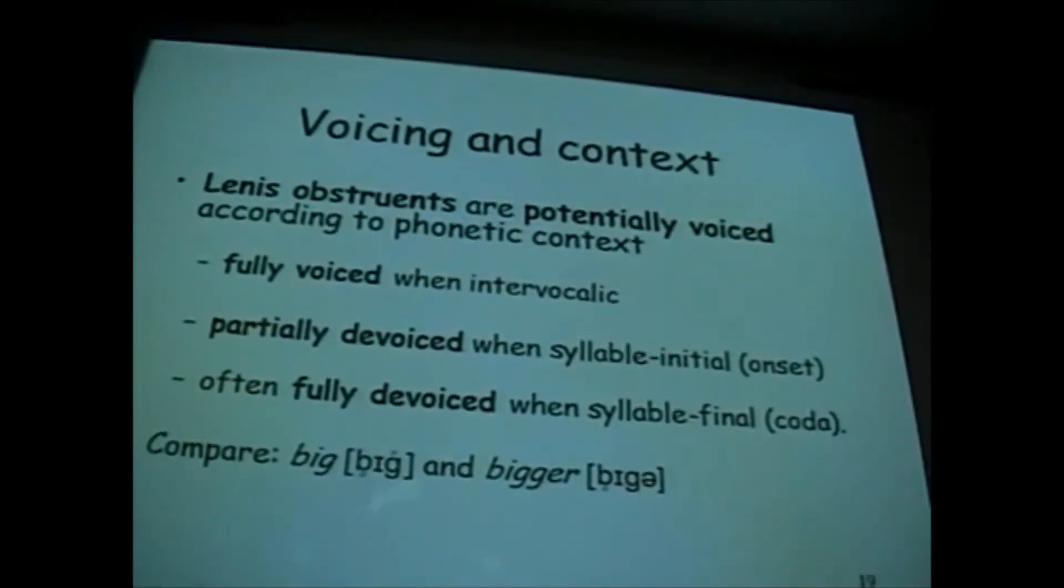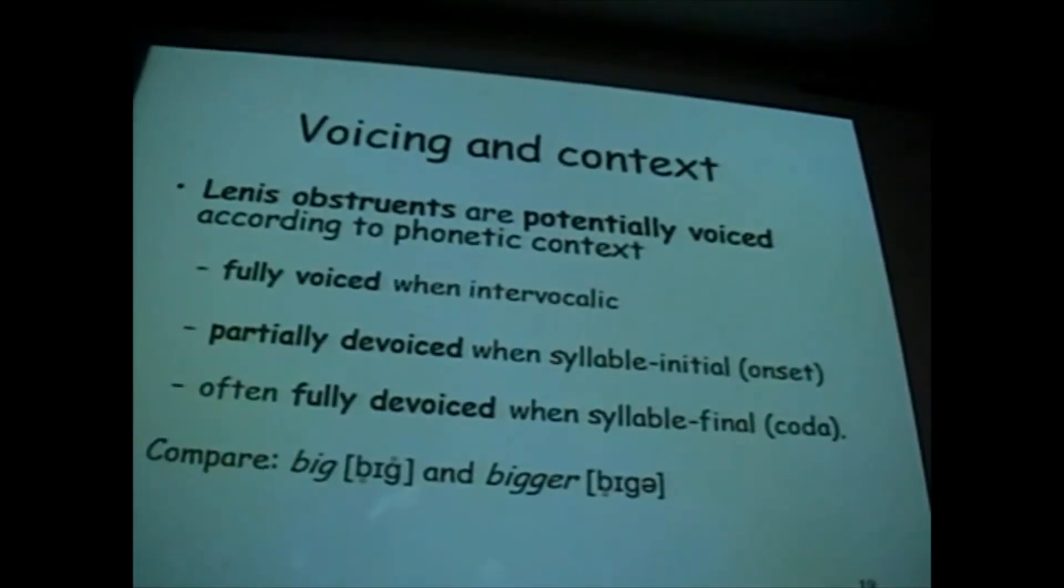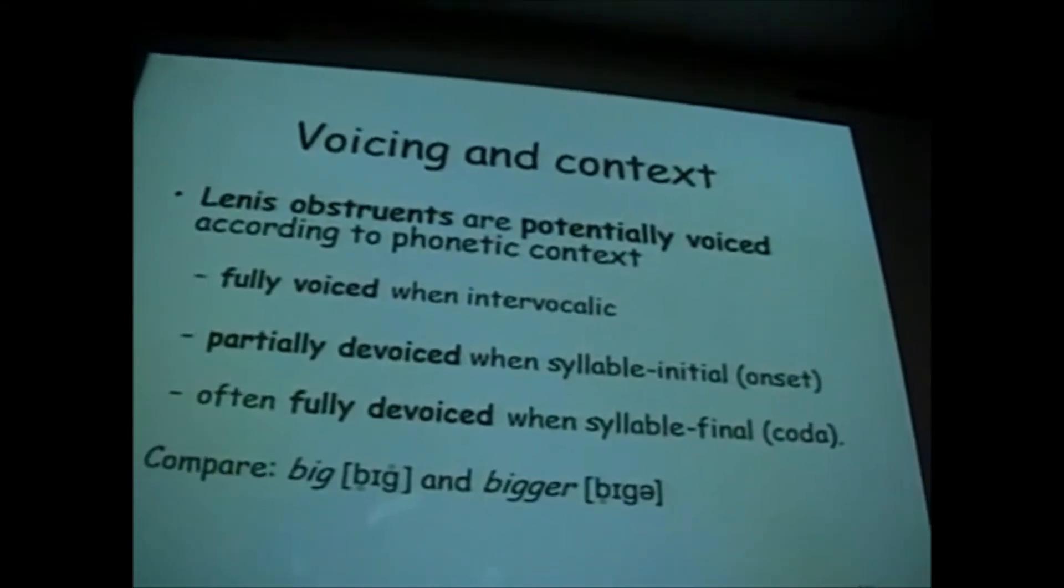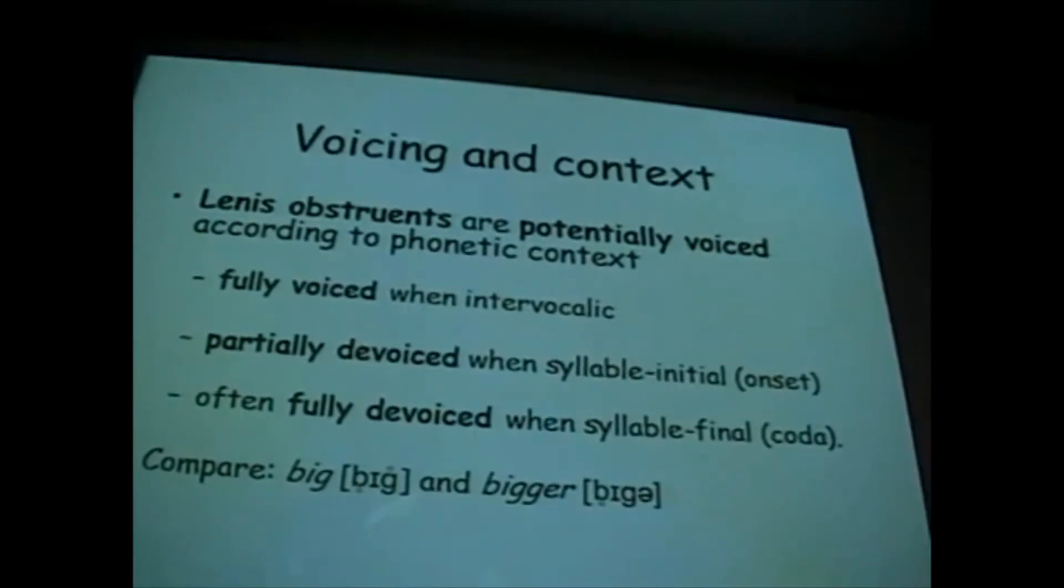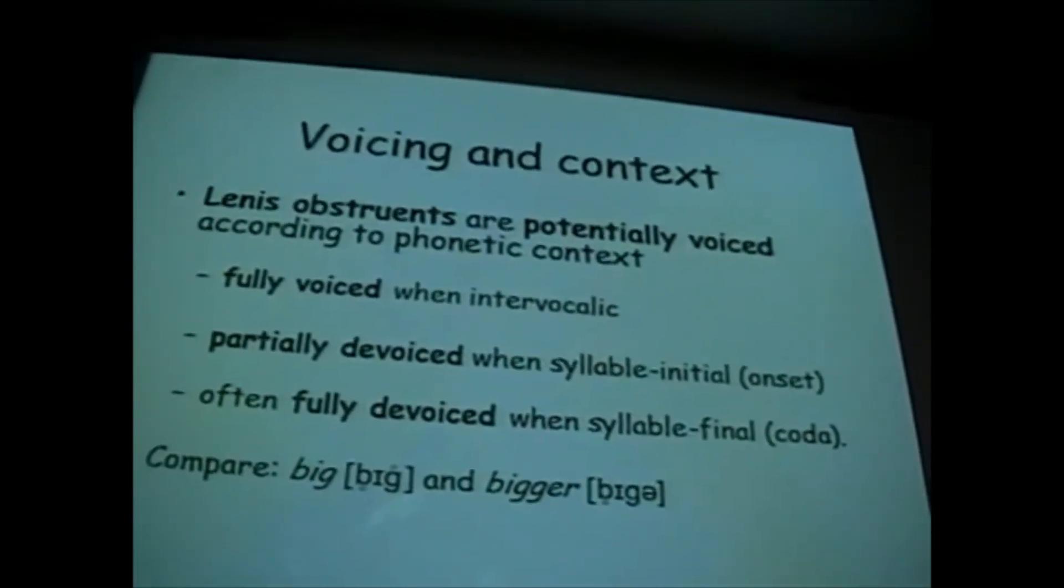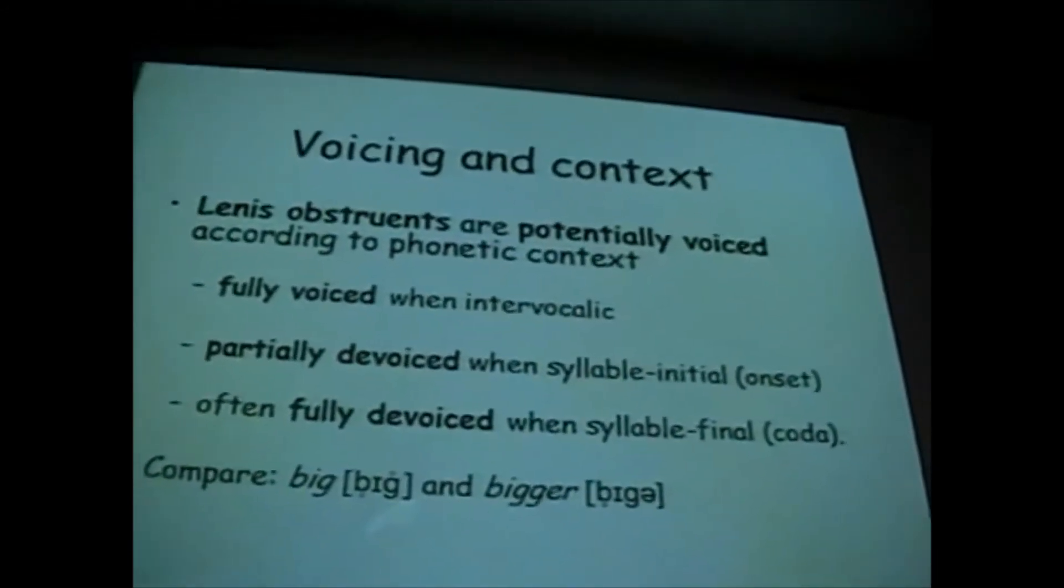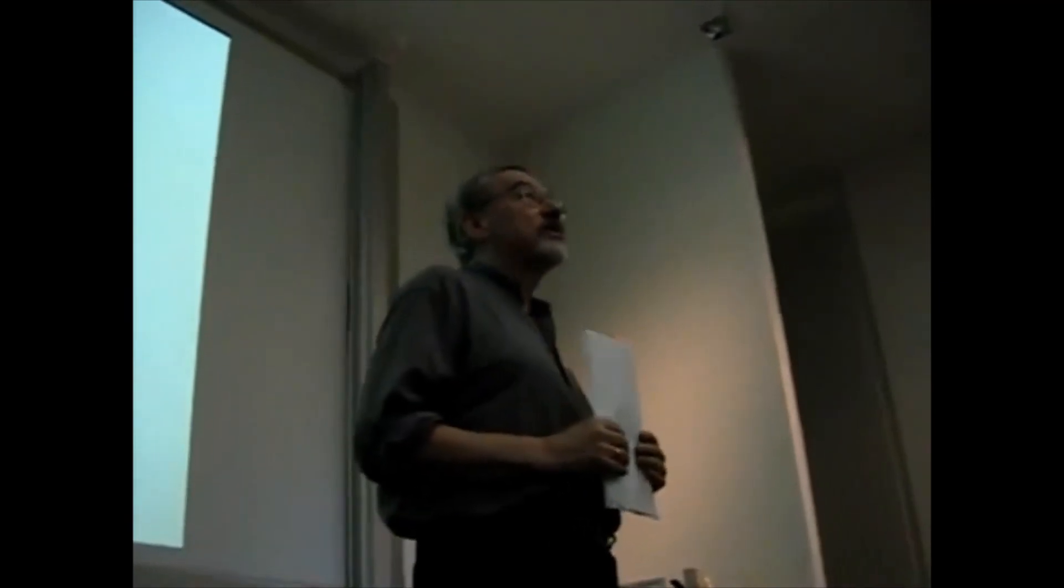But when you find them in coda position, and this is the more interesting one because this is the one where people have the greatest problems, then we often find that it's fully devoiced. So if you take a word like big or a word like rise. And some people were saying it brilliantly, but some people were saying rise with a nice fully voiced Z. But if you get an English person to say it, you'll find they won't have the Z going all the way through. They're likely to say something like rice. How do we know it's a Z not an S? Well, if you compare rice, then you have this pre-fortis clipping on rice, and you don't have that on rise. But the sound itself in this coda position, it's fully devoiced.